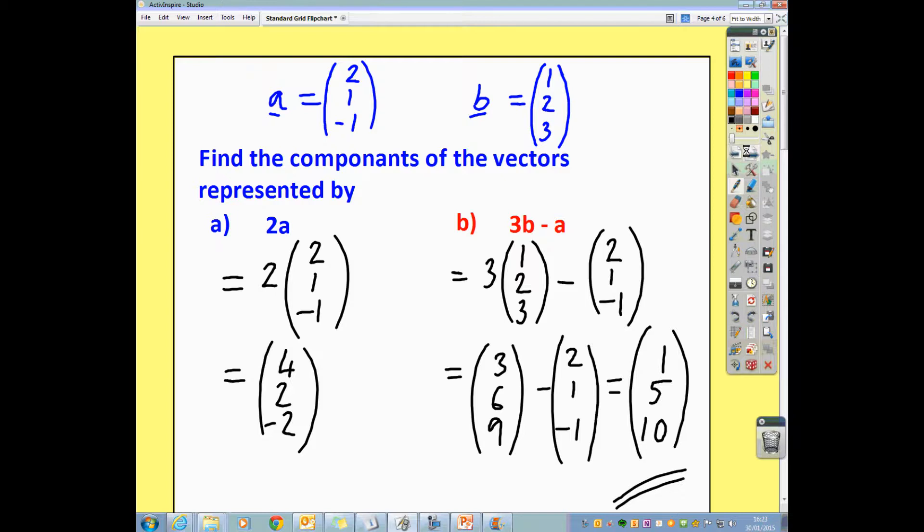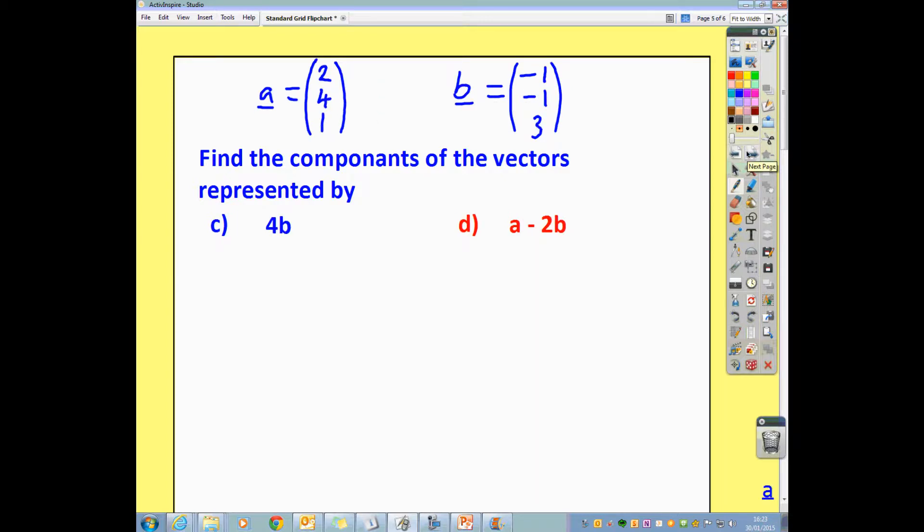Try and see if you can do these two yourselves. So, pause the video, work out 4b, and then work out a minus 2b. And then check back and see what your answers are. So, 4b, all we're doing is multiplying your components by 4. We end up with 4 times (-1, -1, 3). That gives us (-4, -4, 12). And that's us finished.